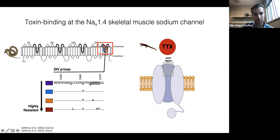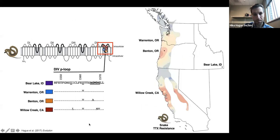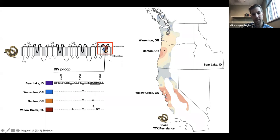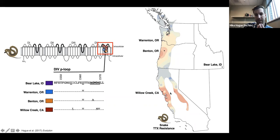When I first started this project, these four alleles had been identified from four different locations on the west coast from four different snakes. The ancestral sequence was identified in Idaho outside the range of toxic newts. The blue and orange alleles were found in the Pacific Northwest hotspot, and the highly resistant red allele with four cumulative amino acid changes was found in the California hotspot. So this was four alleles from four individual snakes, and we didn't really know how these two different lineages of highly resistant snakes in California and the Pacific Northwest had convergently evolved phenotypic resistance.